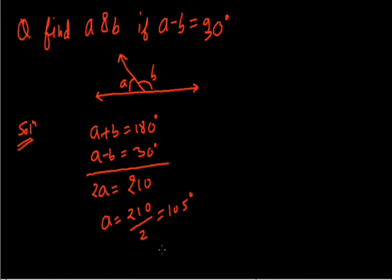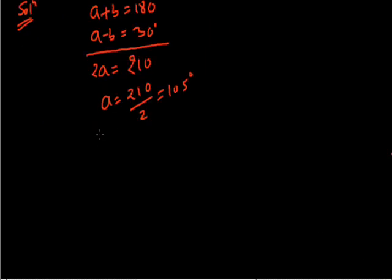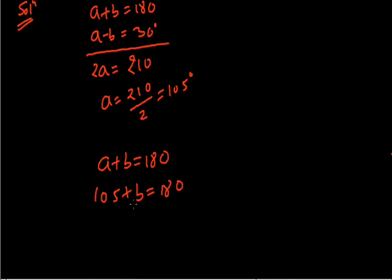The value of B: as we know that A plus B equals 180, we put the value of A, that is 105. So 105 plus B equals 180. Therefore B equals 180 minus 105, which gives B equals 75 degrees. So the values are B is 75 degrees and A is 105 degrees. Now we move to the next question.